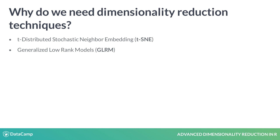On the other hand, we will also review GLRM, which is a parallelized optimization algorithm that can be used with numerical and categorical variables, and allows to impute missing values.